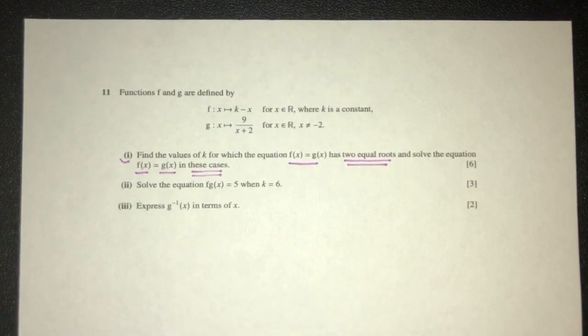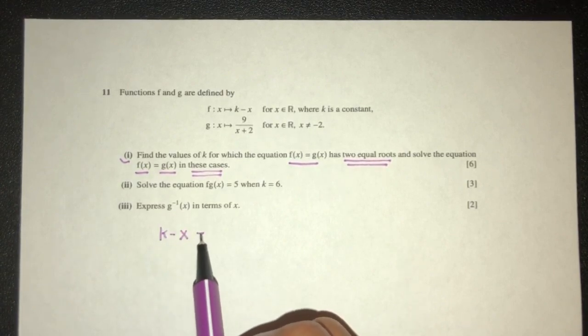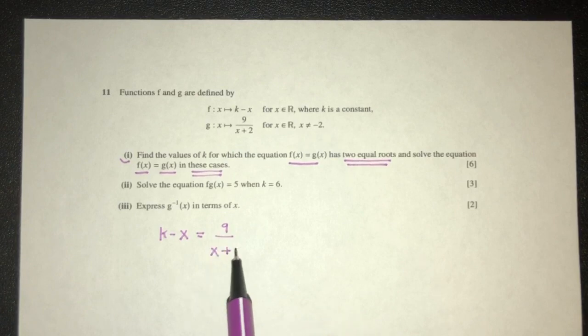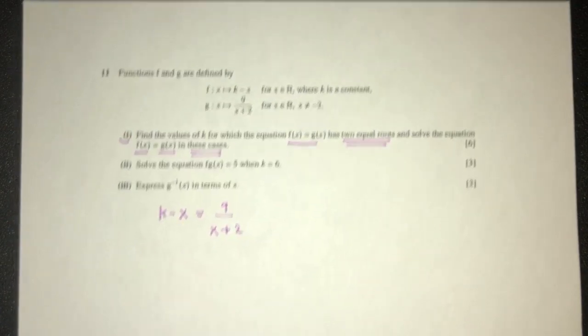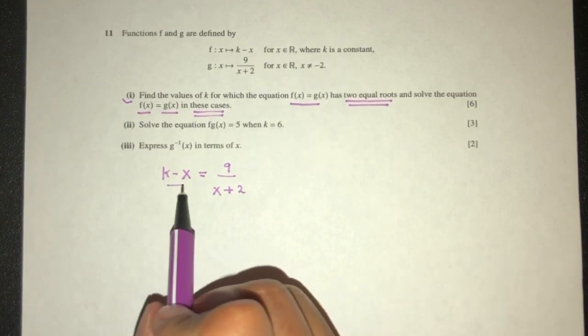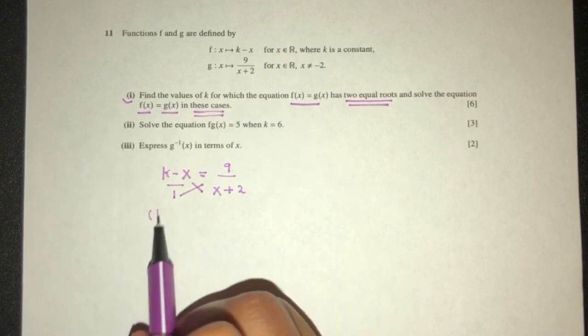First thing, let me write down f of x. So f(x) = k - x is equal to 9/(x+2). We can of course simplify. That will be kx.